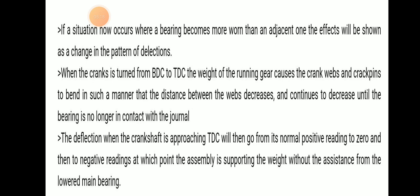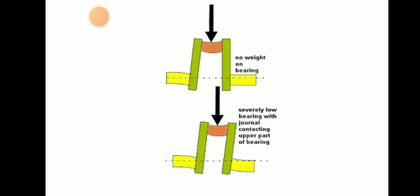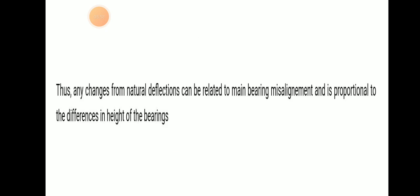The deflection when the crankshaft approaches TDC will then go from its normal positive reading to zero and then to negative readings, at which point the assembly is supporting the weight without assistance from the lowered main bearing. Any change from the natural deflection can be related to main bearing misalignment and is proportional to the difference in height of the bearing.